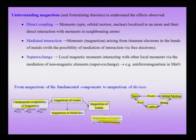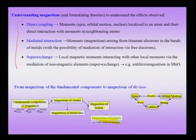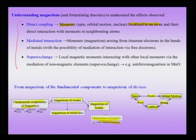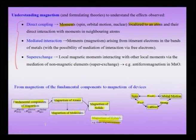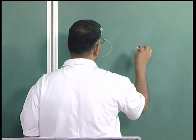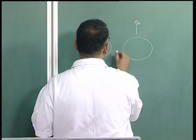To understand various magnetic phenomena like ferromagnetism and anti-ferromagnetism, we can think in terms of three types of interactions. First, there is direct coupling — localized moments on one atom talking directly to a neighboring atom. This direct coupling leads to exchange coupling, which results in parallel alignment of spins, giving rise to ferromagnetic effects.